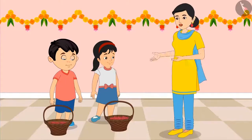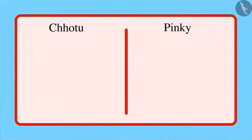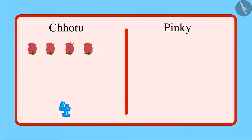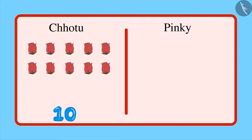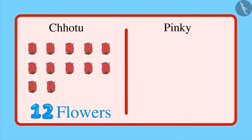First let's see how many flowers Chotu has brought. Counting: 1, 2, 3, 4, 5, 6, 7, 8, 9, 10, 11, and 12 flowers. That means Chotu has brought 12 flowers.